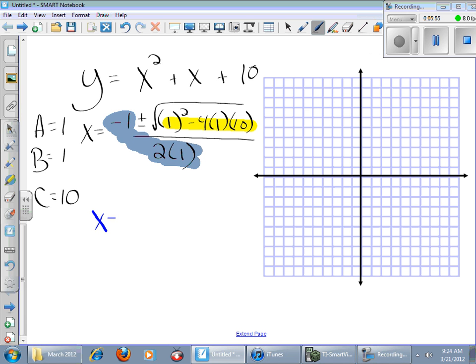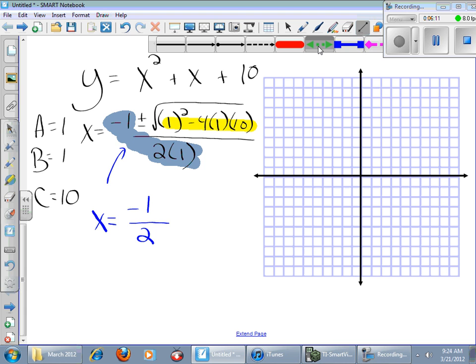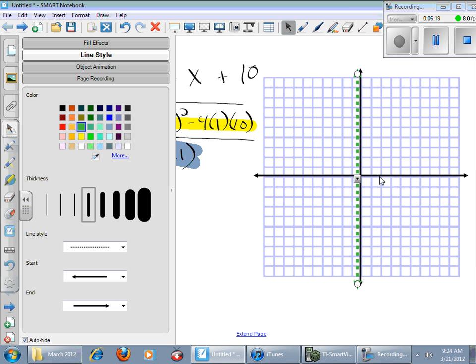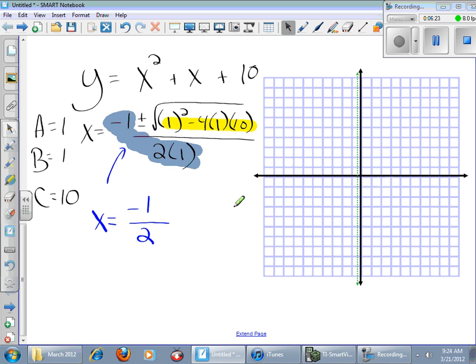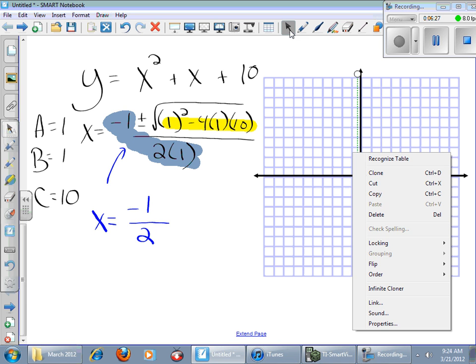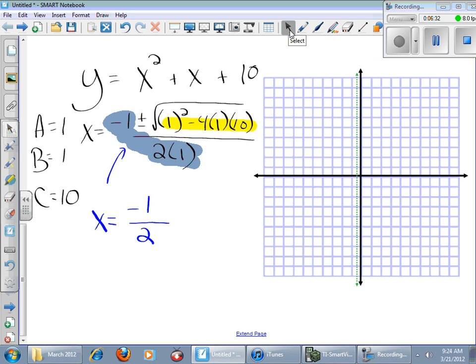Because there are no zeros, I'm going to go right to the x-coordinate of the vertex. I'm going to type x equals the negative 1 over 2, which is negative 1 half. So I know that my line of symmetry is at x equals negative 1 half. That would be approximately there.